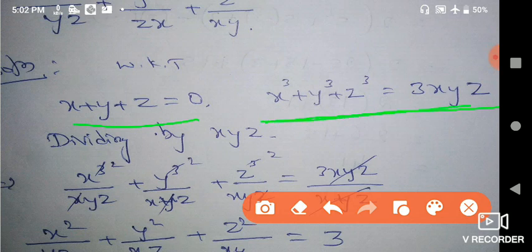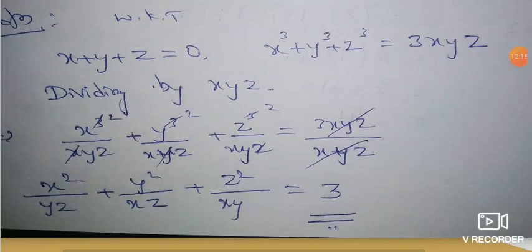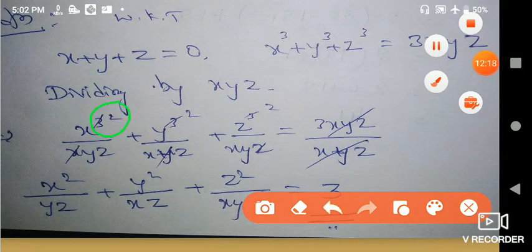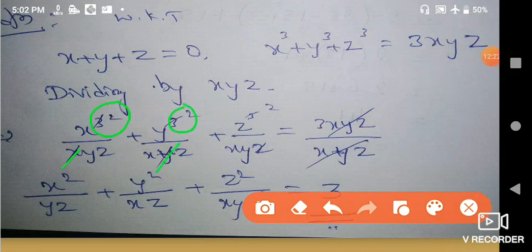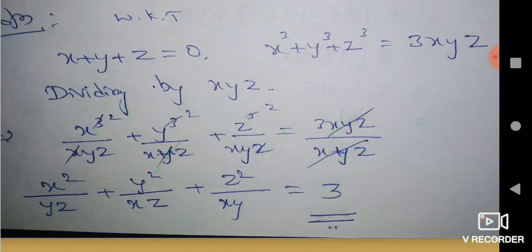So using this equation, dividing 3xyz by xyz: we get x³/xyz + y³/xyz + z³/xyz = 3xyz/xyz. Simplifying: x³ divided by yz gives x²/... here for x cube divided by xyz, one x cancels giving x²/yz. Similarly y²/zx and z²/xy. The xyz terms cancel and we get 3 as the answer.